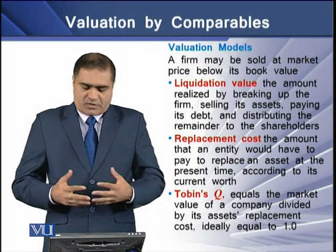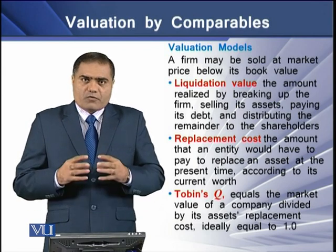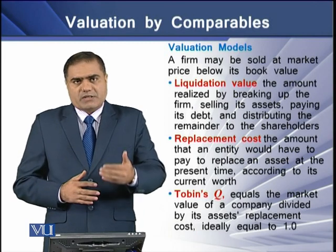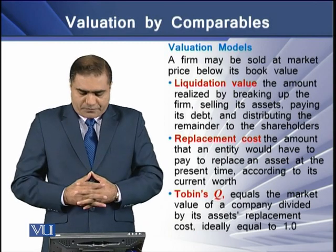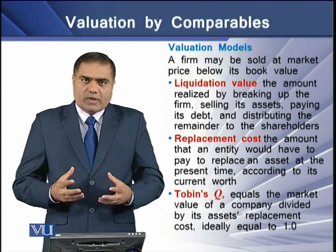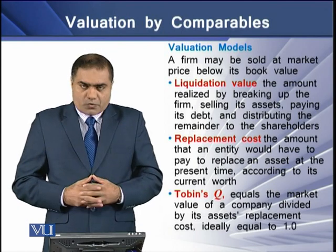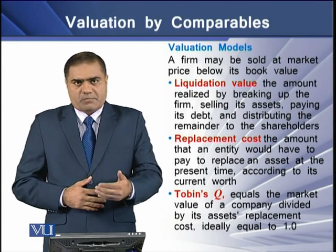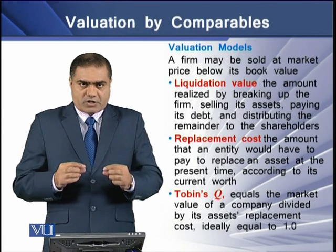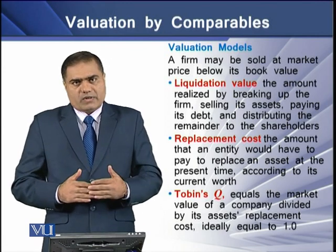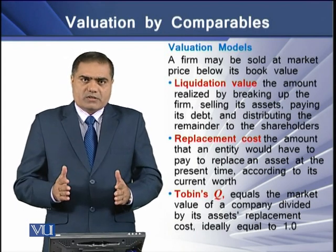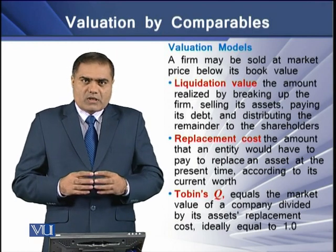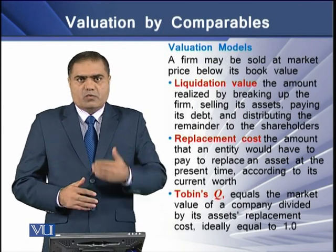Next, we have replacement cost, which is the amount that an entity would have to pay in order to replace any existing asset at the present time according to its current worth. Finally, we have a model called Tobin's Q. Tobin's Q is equal to the market value of a company divided by its assets' replacement cost. The resulting coefficient from dividing the market value of assets by their replacement cost is Tobin's Q, and ideally its value is considered good when equal to 1.